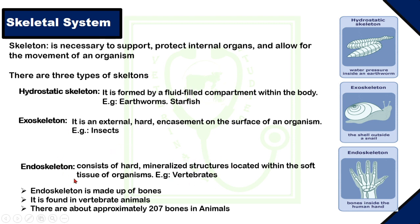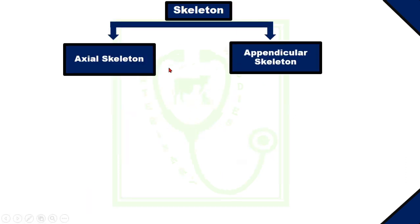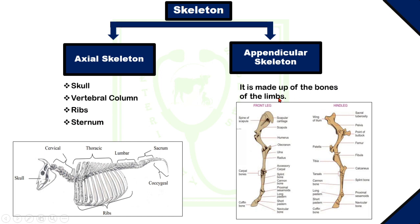There are about 207 bones in animals. The animal skeleton is divided into two parts: the axial skeleton and the appendicular skeleton. Axial skeleton is made up of the skull, vertebral column, ribs, and sternum. Appendicular skeleton is made up of the bones of the limbs — this is the forelimb and this is the hind limb.